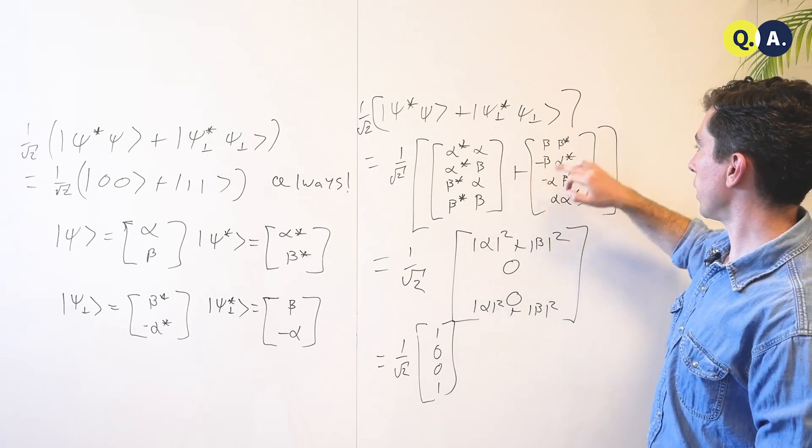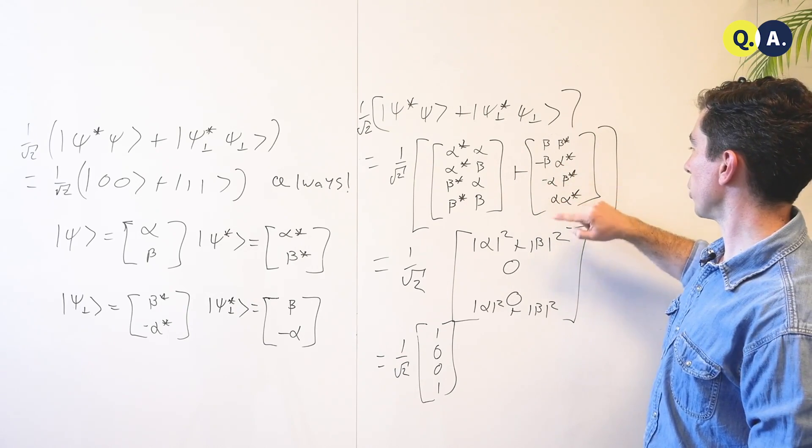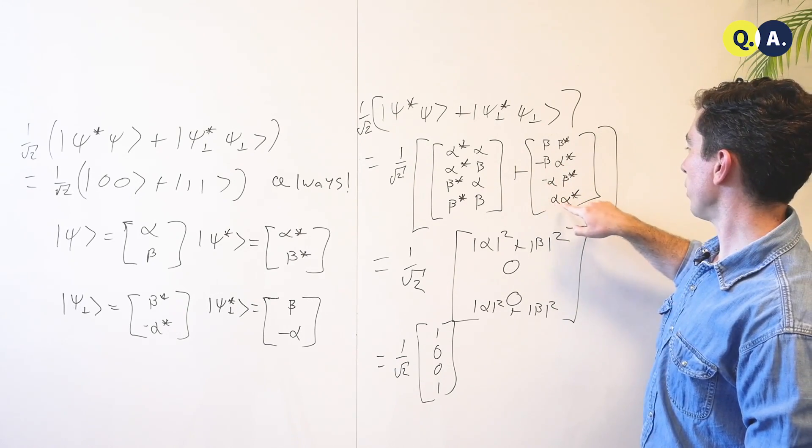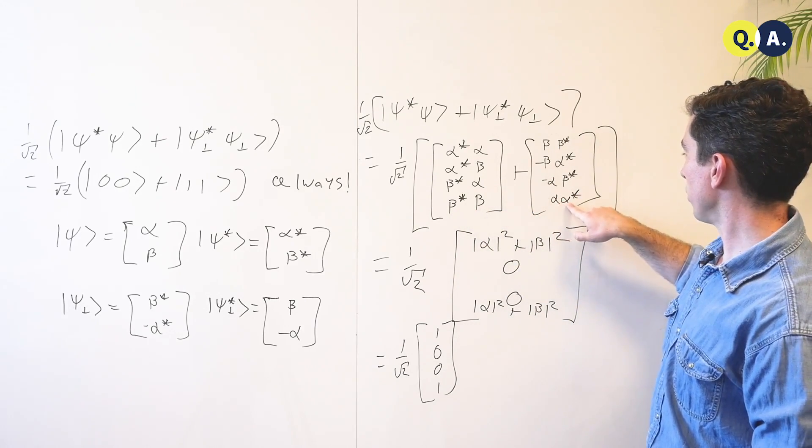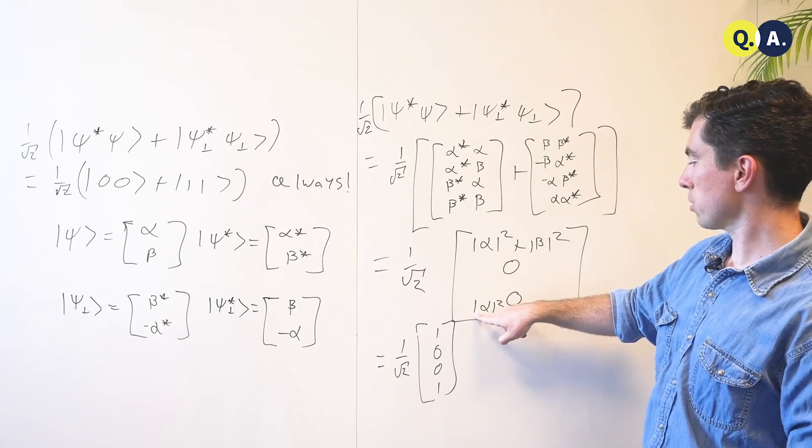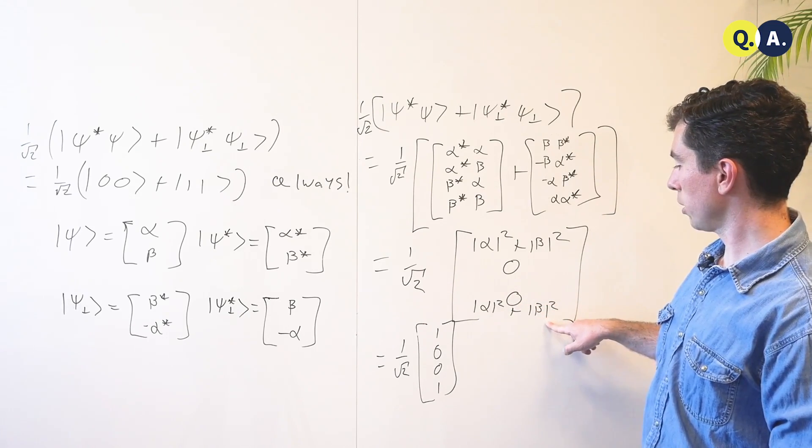And we're going to add to that beta star beta minus beta alpha star minus beta star and alpha alpha star. Now, beta star beta plus alpha star is just the magnitude of alpha squared plus the magnitude of beta squared, which is 1.